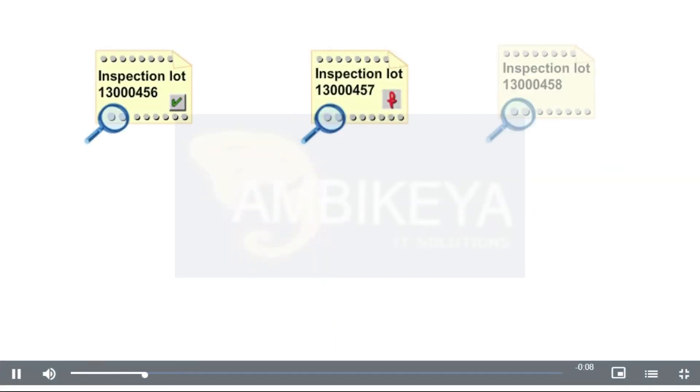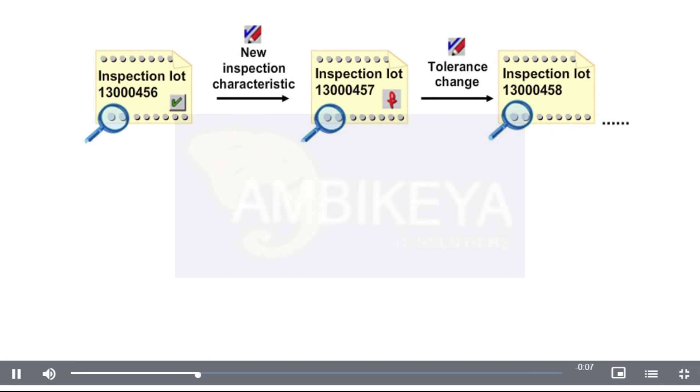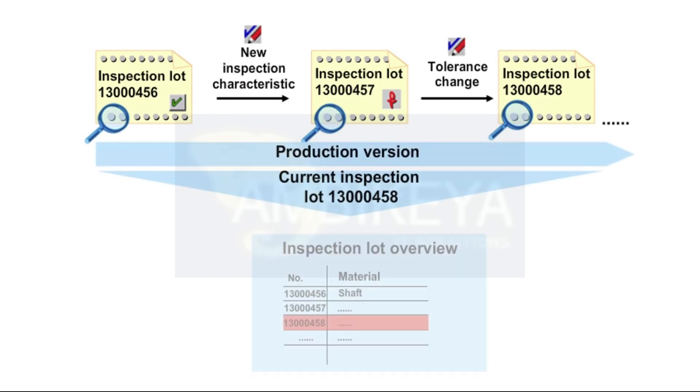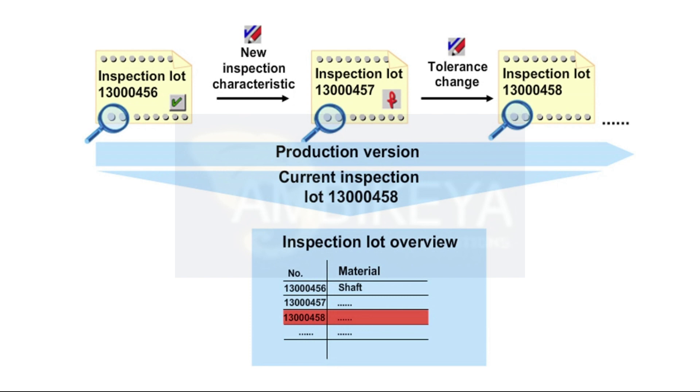You can create inspection lots for production versions. However, there should be only one open inspection lot for each production version.